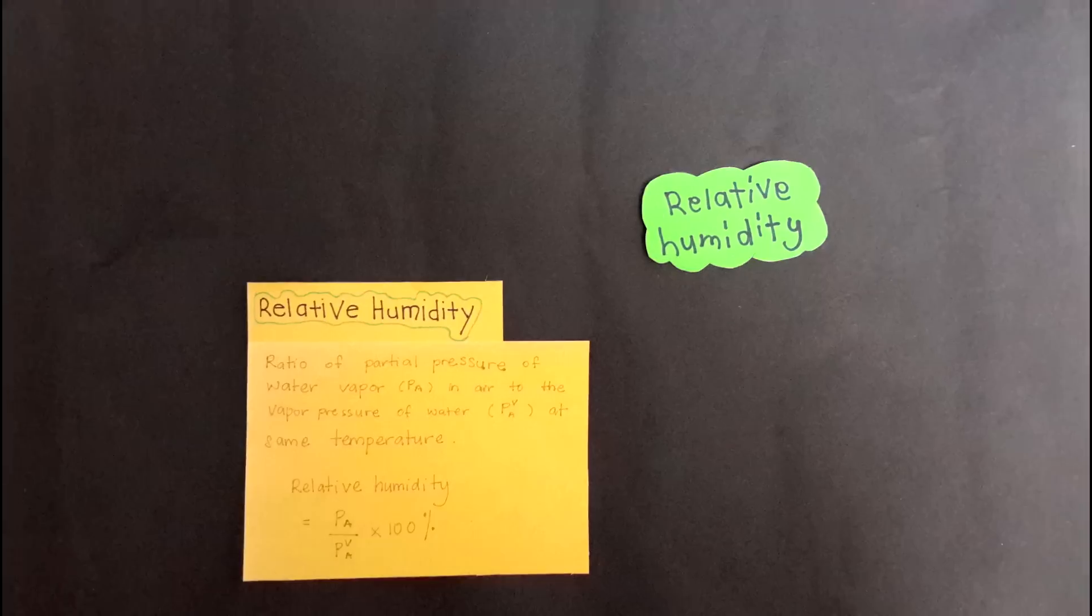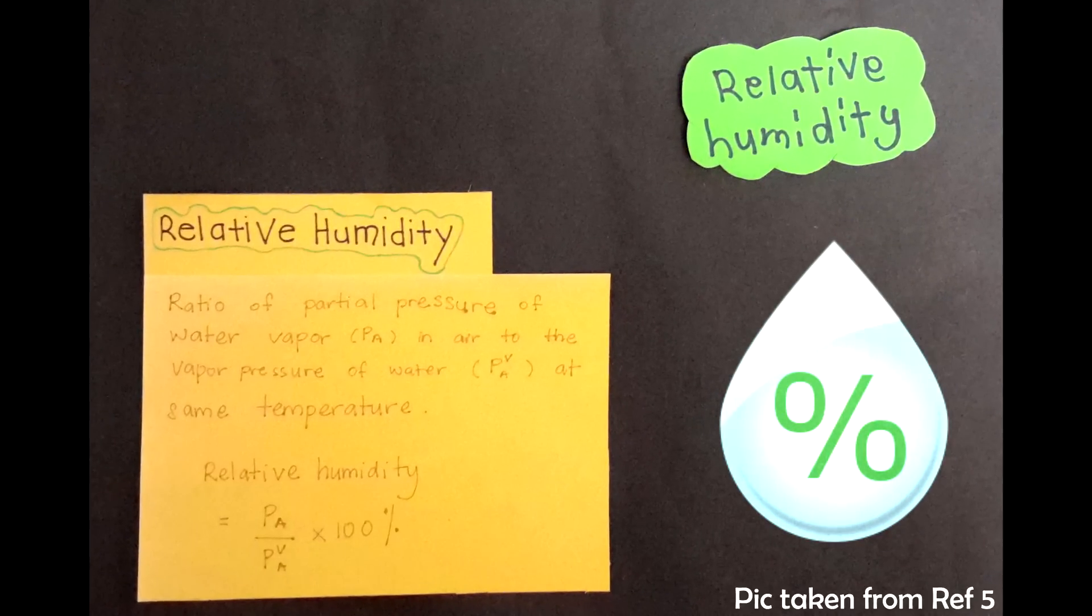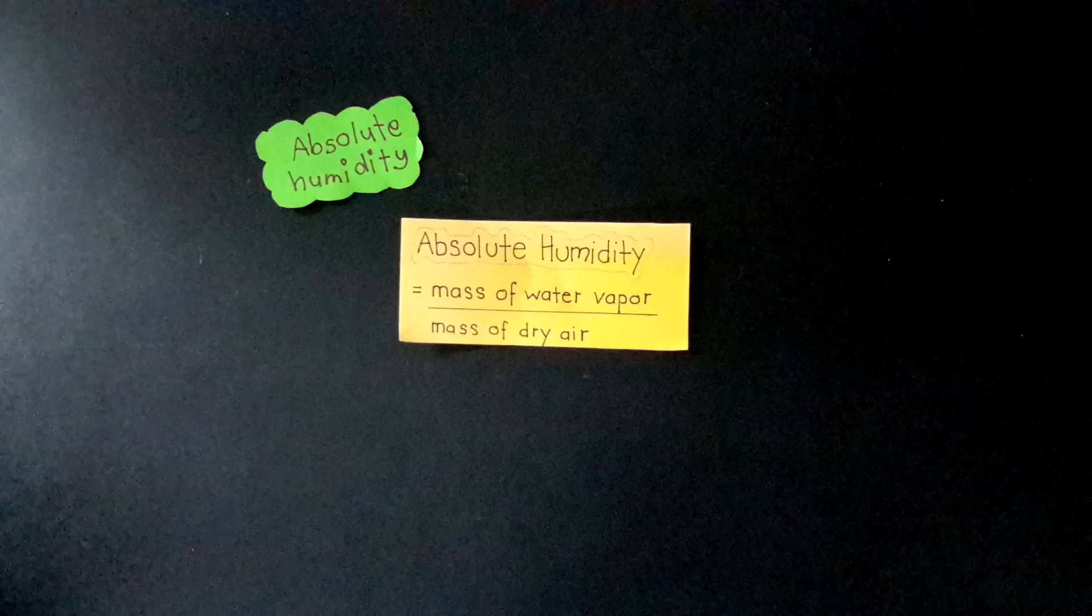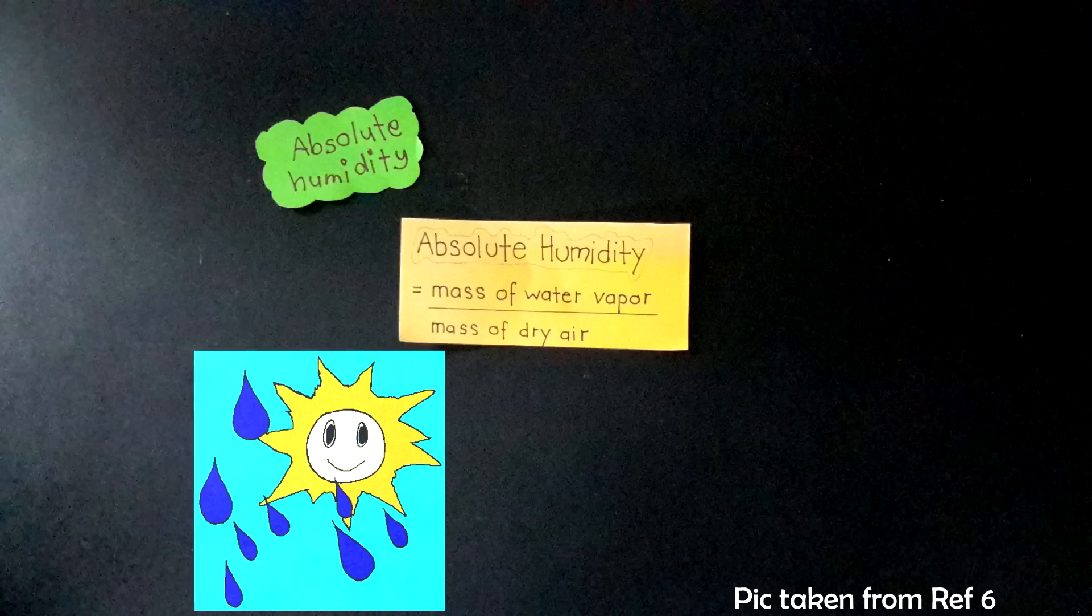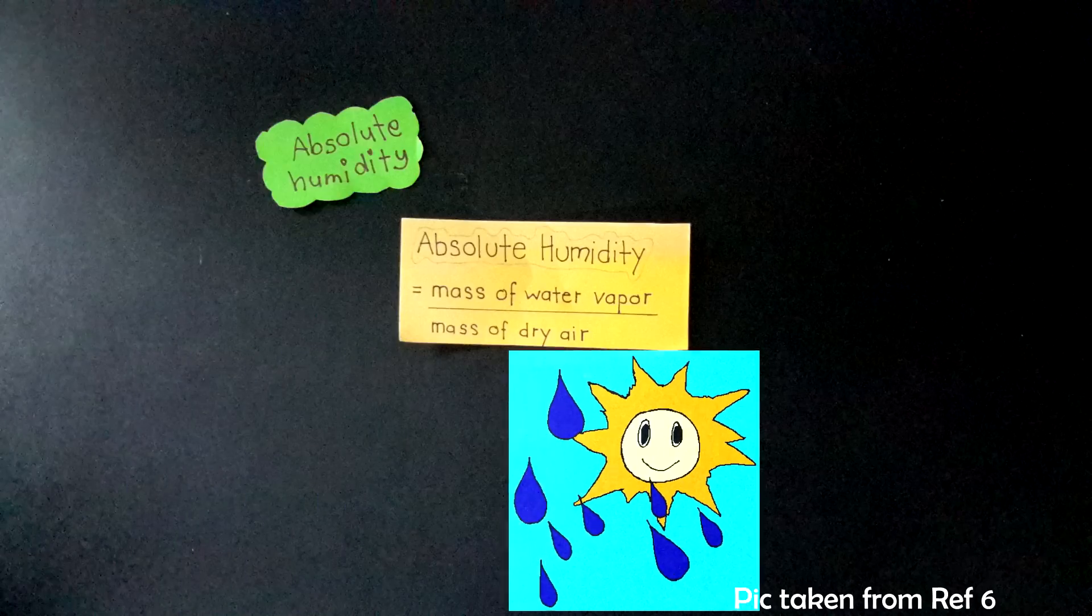Relative humidity: ratio of partial pressure of water vapor to the vapor pressure of water at the same temperature. Absolute humidity: the mass of water vapor per unit mass of dry air. This is a direct measure of moisture content in air.